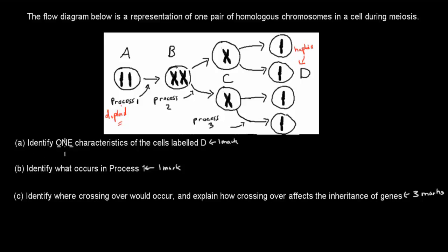And this really answers the first question. Identify one characteristic of the cells labeled D. And these will have the haploid number of chromosomes. Half the number of chromosomes the original cell had. The cells have the haploid number of chromosomes. And that's enough to get you one mark.